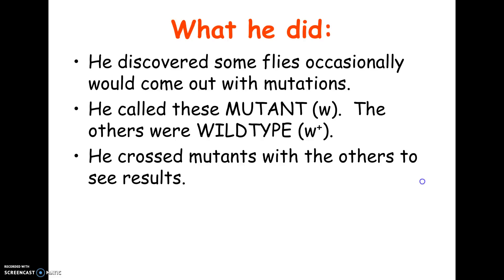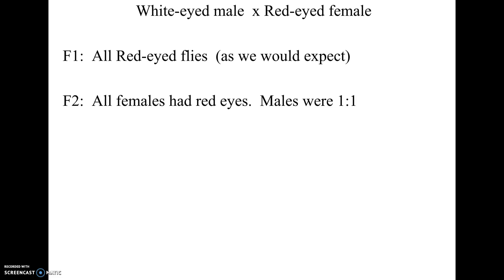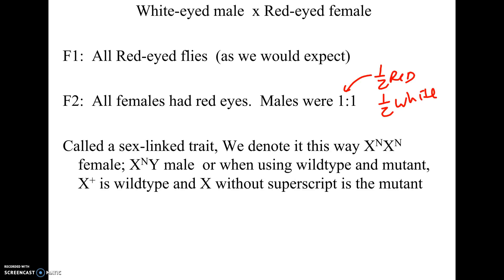His most famous cross: he crossed white-eyed males with red-eyed females. In the F1, all offspring came out with red eyes, which tells us red is dominant to white — the white eye is the mutant one. But in the F2 cross, instead of the expected 3:1 ratio, all females came out with red eyes while males came out 1:1 — half red-eyed, half white-eyed. He knew something different was going on between the sexes, that it had something to do with their sex chromosomes. So he called this a sex-linked trait.